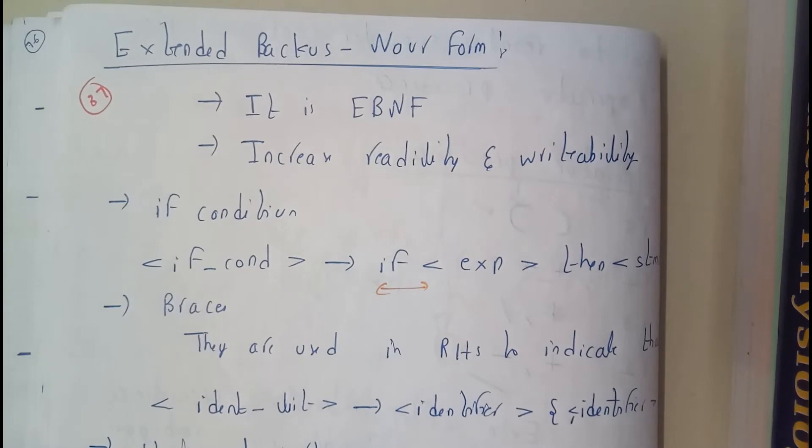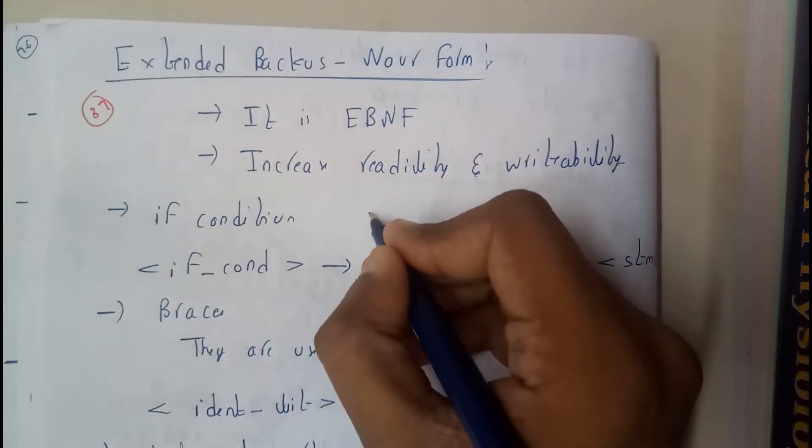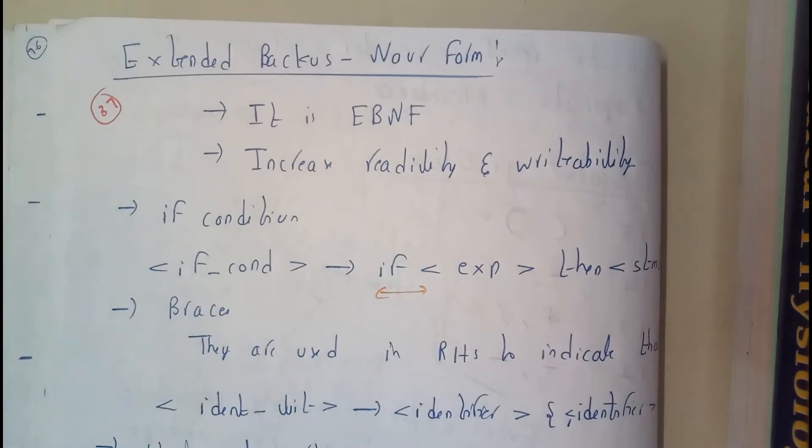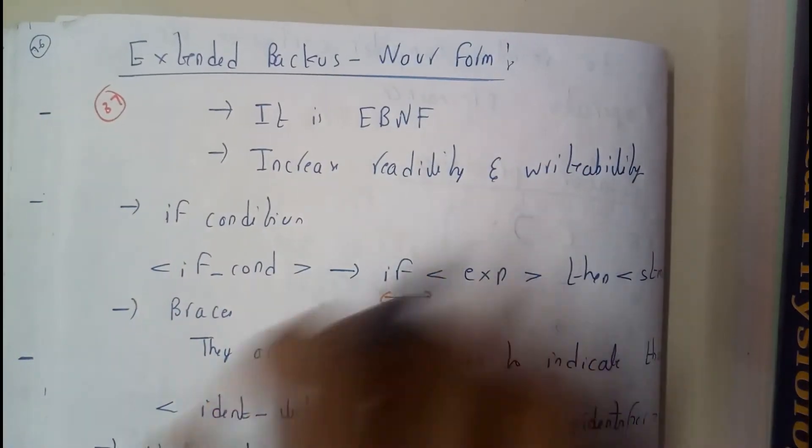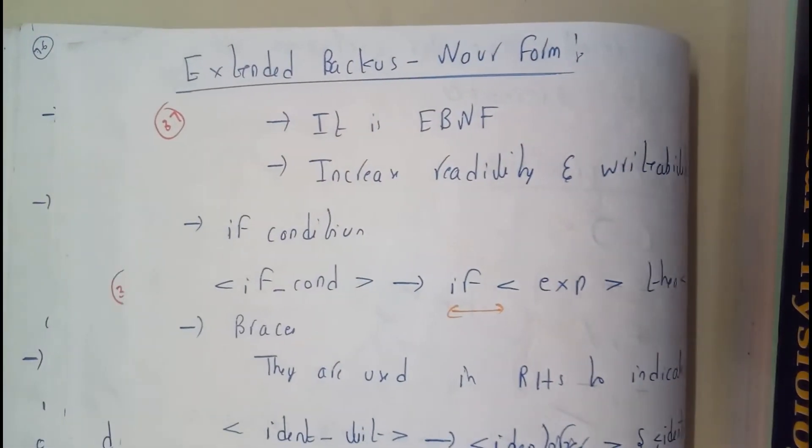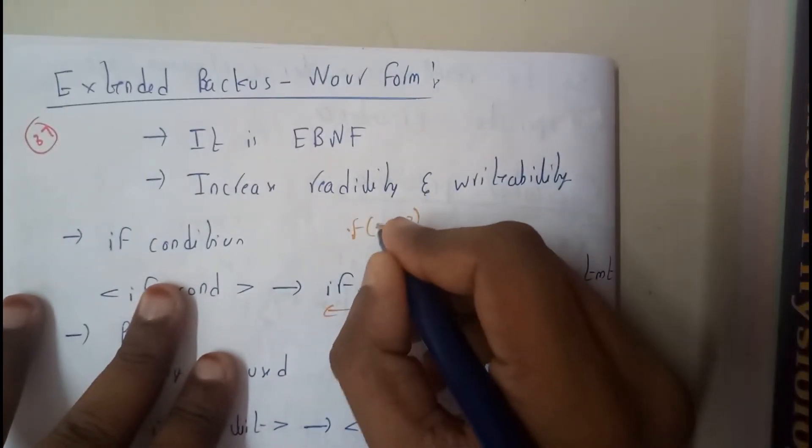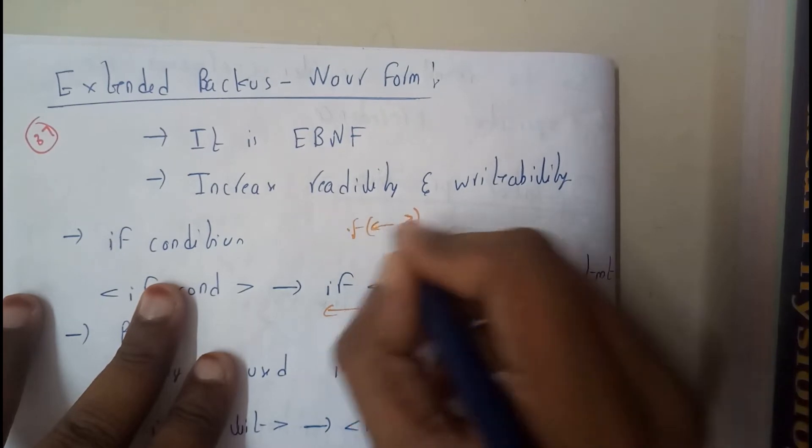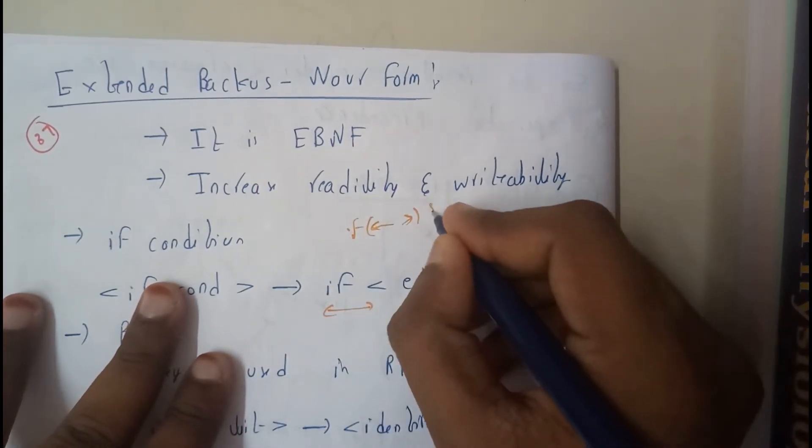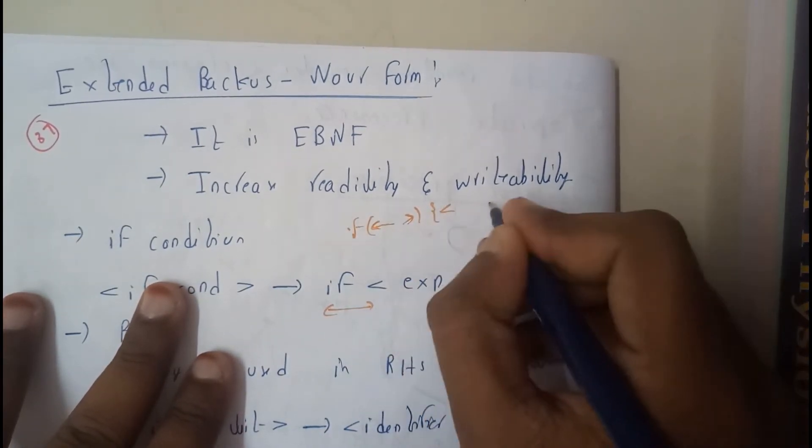In the previous form, we used to write if condition directly with internal conditions and statements step by step, using parentheses and conditions in square brackets with greater than and less than symbols. We would start and close with these symbols repeatedly.